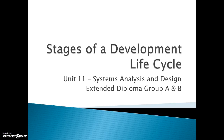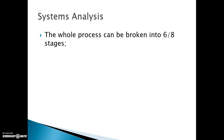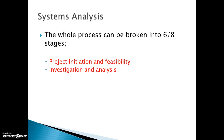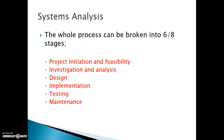We are going to look at the different stages of a development life cycle now. These can basically be broken down into six to eight stages. The stages are: project initiation and feasibility, investigation and analysis, design, implementation, testing, and maintenance. These are the six to eight stages that each development life cycle follows. The way it's done will vary, as you've seen in the spiral model and the waterfall, but these are the main stages that most typical development life cycles will consist of.